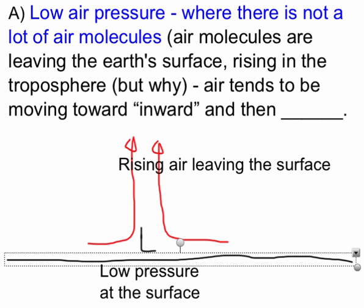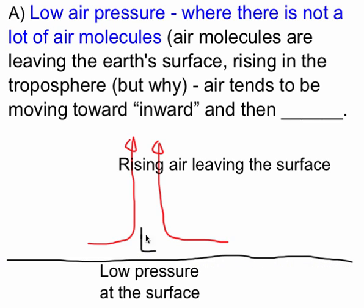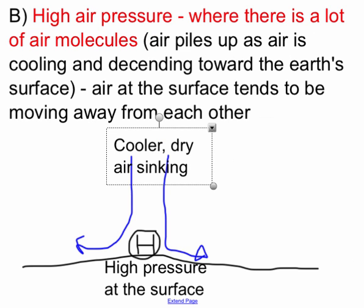Low air pressure is where there's not a lot of air molecules. In my picture here, why aren't there a lot of air molecules here at the surface? Why is there low pressure? Because for some reason, air is rising and leaving the surface. Air tends to be moving inwards and then up at low pressure areas, up away from the surface, giving us low pressure.